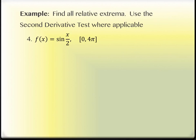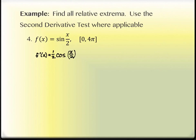We have one more example — a trig function with an interval, which is pretty typical. It wants us to find all relative extrema and use the second derivative test. Same directions as the last one. The first step is to find the derivative. The derivative of sine of (x/2) is cosine of (x/2) times one half — chain rule. The derivative of sine is cosine, and then the derivative of x over 2 is one half in front.